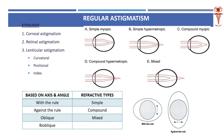Usually you will encounter corneal astigmatism, but there can also be astigmatism because of the retina and lens, whose curvatures are also curved. Retina is curved, lens is also curved, and these may also contribute. However, 9 out of 10 times it is the cornea which is the cause.